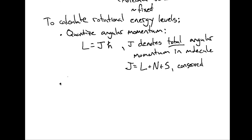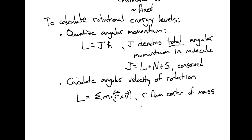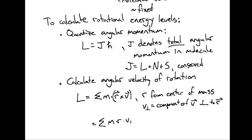The next step in calculating rotational energy levels is to calculate the angular velocity of the rotation. Starting with the definition of angular momentum: classically, it is the sum of each component of mass at a radius of separation from the center of mass crossed with its velocity. Choosing the perpendicular component of velocity, we can simplify this as the sum of mass times radius times perpendicular velocity for each atom in the molecule.